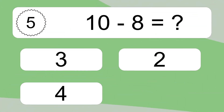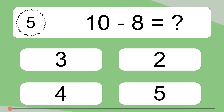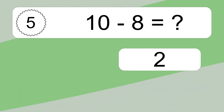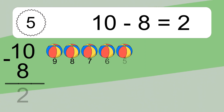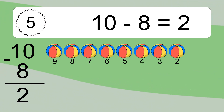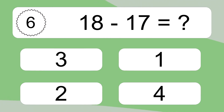10 minus 8 equals what? 10 minus 8 equals 2. Let's count it: 9, 8, 7, 6, 5, 4, 3, 2.